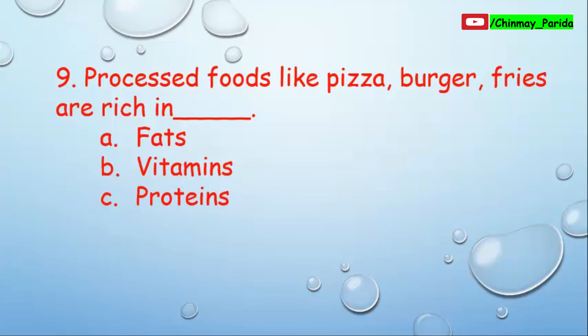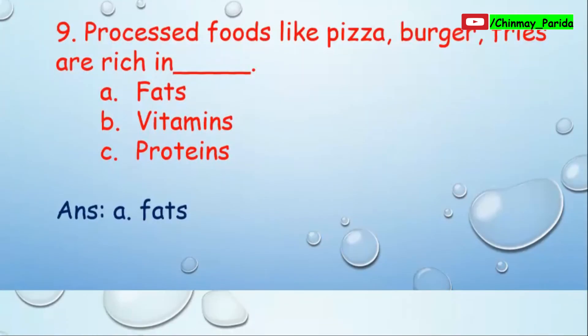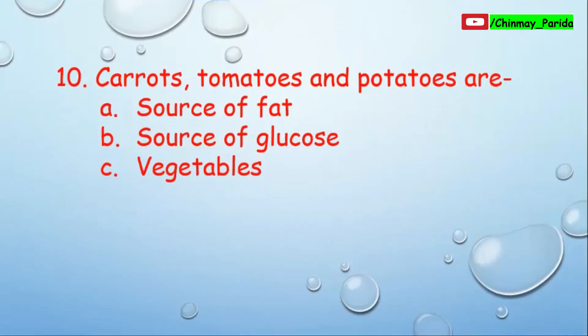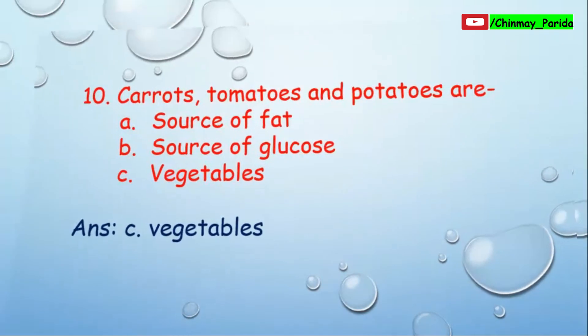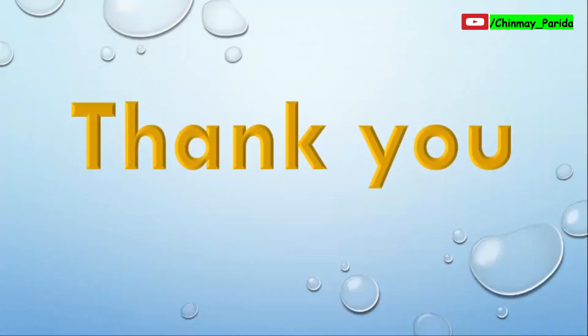Question number nine: Processed foods like pizza, burger, and fries are rich in fats — we get a lot of fats from this type of food. Question number ten: Carrots, tomatoes, and potatoes are — option A: source of fat, option B: source of glucose, option C: vegetables. Carrots, tomatoes, and potatoes are vegetables. Very easy!